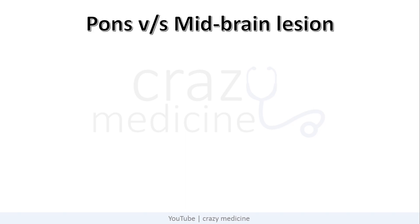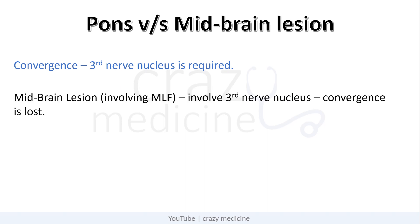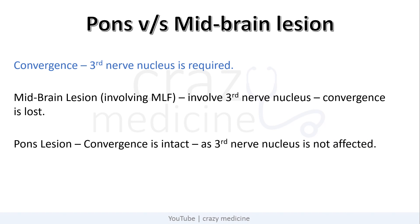Now, how to differentiate whether the lesion is in the pons or midbrain. It is important to localize the lesion because MLF is a longitudinal structure which extends from the midbrain to the pons. For convergence, the 3rd nerve nucleus is required. So if the lesion is high in the midbrain involving the MLF — which is likely to also involve the 3rd nerve — convergence is lost. If the lesion is in the pons, convergence is intact as the 3rd nerve nucleus is not directly affected.